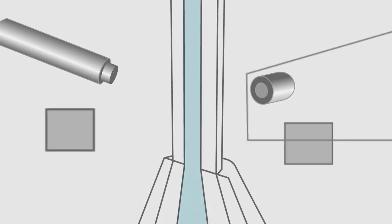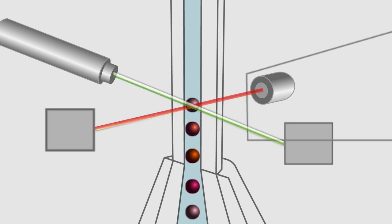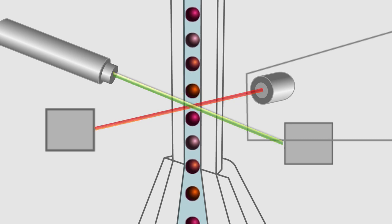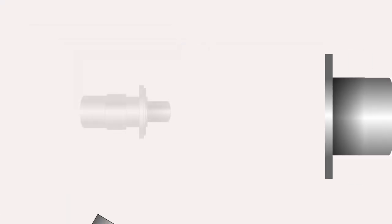XMAP Technology uses two primary methods for detection, flow cytometry and CCD imaging. In flow cytometry, beads are passed through a flow cell where one laser is used to excite the fluorescent dyes for bead identification, and another laser is used to excite and quantify the assay reporter dye.